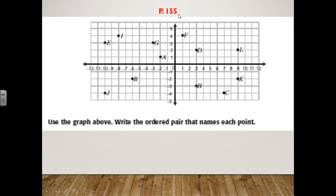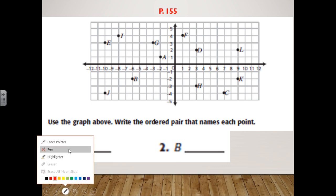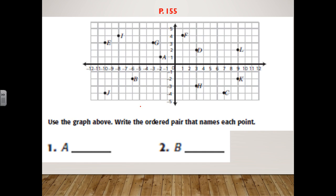Now open your booklet to page 155. There is a graph with some points on it, and the question asks you to use the graph to write the ordered pair that names each point. For point A, let's search for it on the graph — there it is.